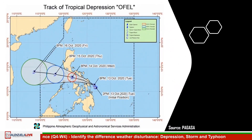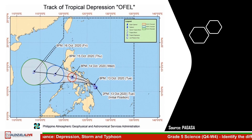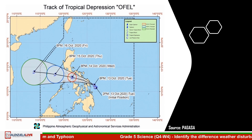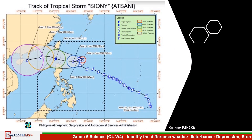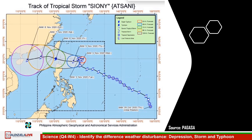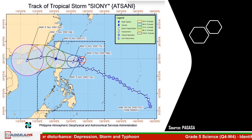One recent example of a tropical depression is Tropical Depression Ofel. The map shows Tropical Depression Ofel in its early days, maintaining its strength before it leaves the Philippine area of responsibility. In this picture, you can see Tropical Storm Shawnee, which started as a tropical depression on October 29, 2020, and gradually intensified into a severe tropical storm by November 4, 2020.